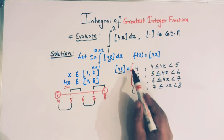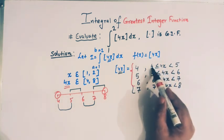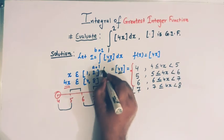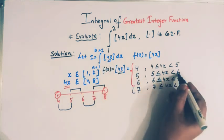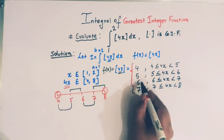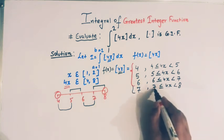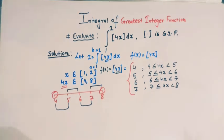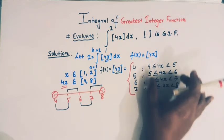So this is how we express the function f(x) = [4x] as a piecewise function. When 4x lies between 4 and 5, f(x) = 4; when between 5 and 6, f(x) = 5; when between 6 and 7, f(x) = 6; and when between 7 and 8, f(x) = 7.